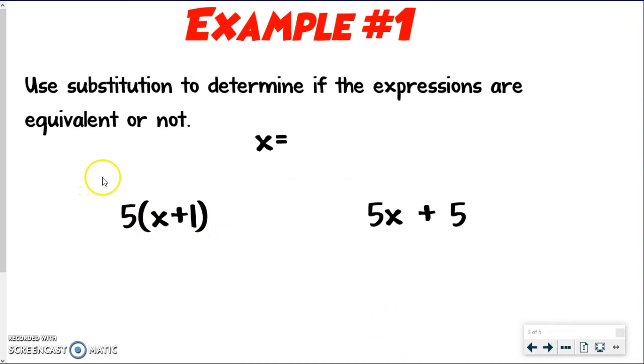So it says, use substitution to determine if the expressions are equivalent or not. And again, they're not telling us what x is. We get to choose this time. So like I said, my golden rule is to keep the numbers low, because it's easier to work with, but also numbers that are going to truly prove whether they're equivalent or not. So I'm going to just start with 3. We only have x, so we only need one number.